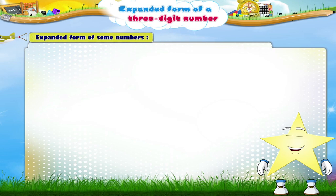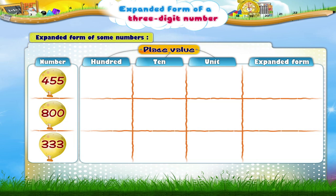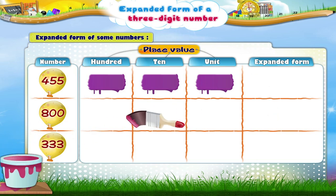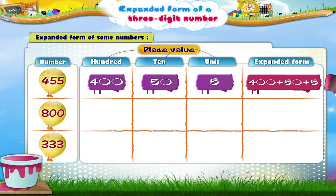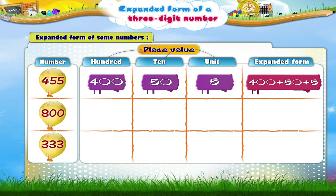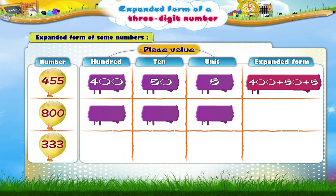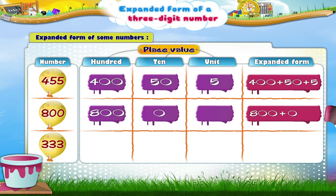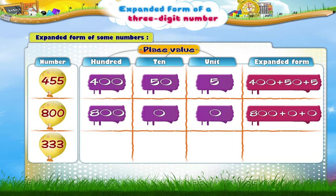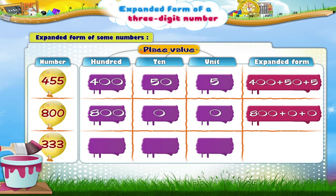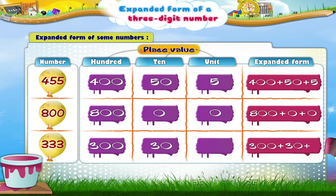Now Starry, look at the expanded form of some numbers. The expanded form of 455 is 400 plus 50 plus 5. The expanded form of 800 is 800 plus 0 plus 0. The expanded form of 333 is 300 plus 30 plus 3.